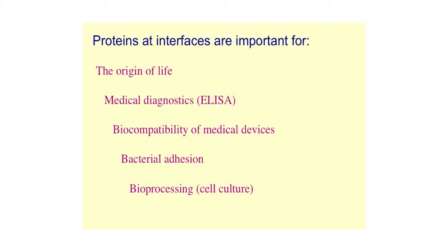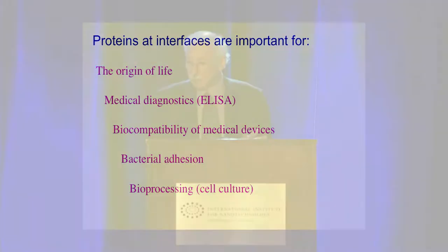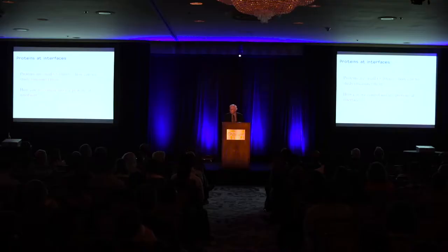Humans are made up of an estimated 50,000 to 100,000 proteins — one estimate puts it at a million. Protein signals within our body are delivered in an ordered and organized fashion. Proteins at interfaces are important for the possible origin of life, for medical diagnostics, biocompatibility in medical devices, bacterial adhesion, and the multi-billion dollar bioprocessing industry, particularly for cell culture systems.